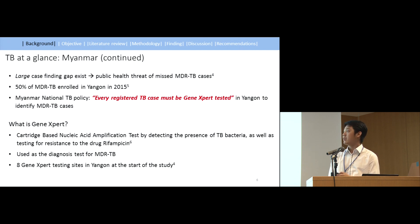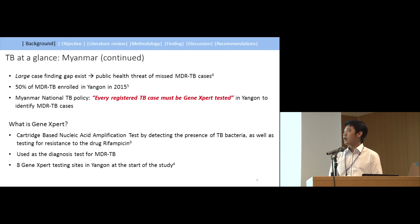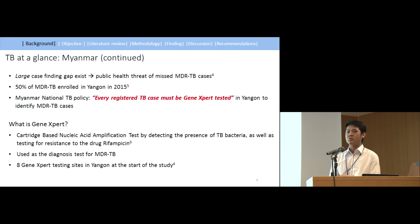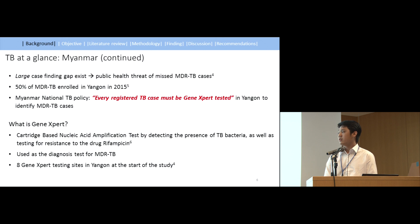Almost all of those 3,000 MDR-TB patients are enrolled in Yangon. Myanmar's national TB program issued that every registered TB case must be GeneXpert tested in Yangon to identify MDR-TB cases. GeneXpert is a cartridge-based nucleic acid amplification test that can detect TB and also rifampicin resistance. Due to limited resource settings, our country uses GeneXpert as the diagnostic test for MDR-TB.